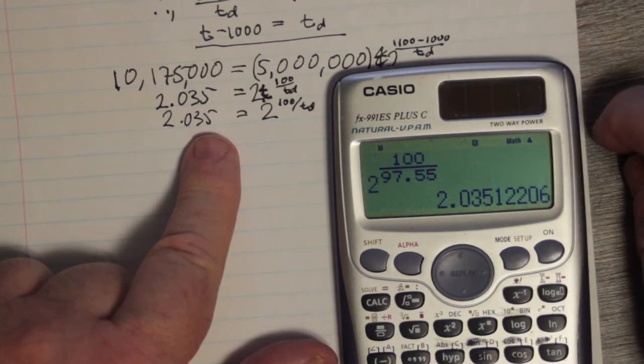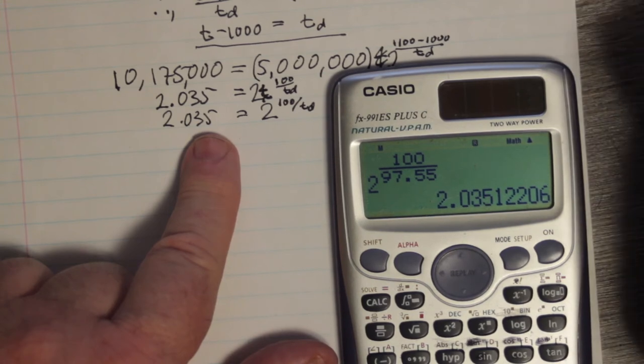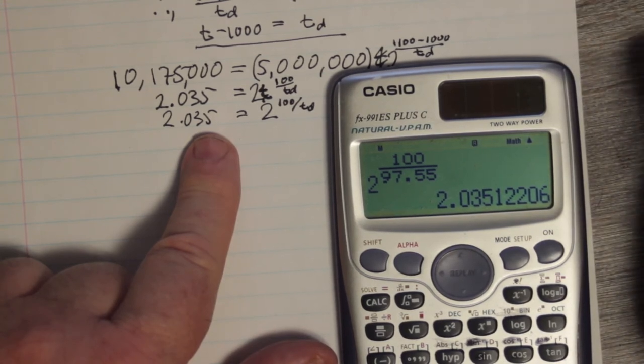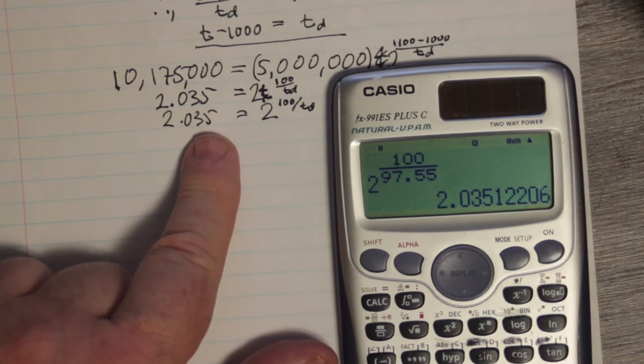So 97.55 is my doubling time. It takes 97.55 years for the population to double on average. That's kind of what we're saying.